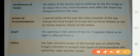Persistence of vision: the ability of the human eye to continue to see the image of an object for a very short duration, even after the object has disappeared from view.